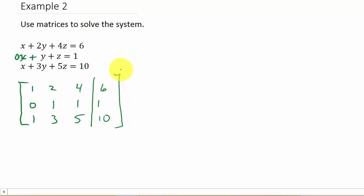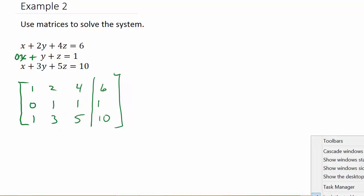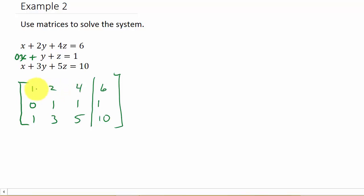And there's our augmented matrix. So what we can do is we can interchange any two rows. We can multiply each element of a row by a non-zero constant. And we can replace a row by the sum of itself and a constant multiple of another row of the matrix.